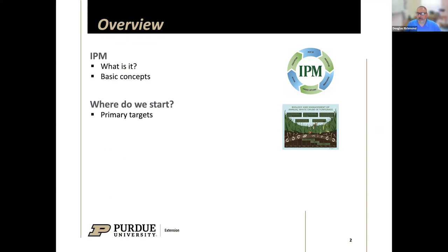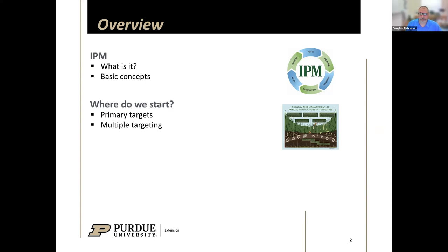I'll focus a little bit on life cycles of primary targets. This is the foundation for building an insect management program that relies especially on insecticide products. It's important to have a primary target and also important to think about multiple targeting — we're not just going after one insect at a time. We have to think holistically about what other targets might be out there potentially causing damage in turf. So we'll talk about primary targets and secondary targets in this multiple targeting framework.